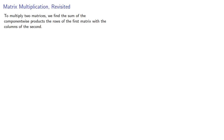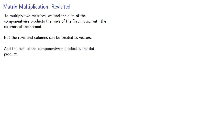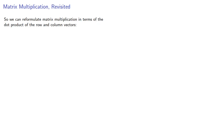Remember that to multiply two matrices, we find the sum of the component-wise product of the rows of the first matrix with the columns of the second. But the rows and columns can be treated as vectors, and the sum of the component-wise product is the dot product. So we can reformulate matrix multiplication in terms of the dot product of the row and column vectors.